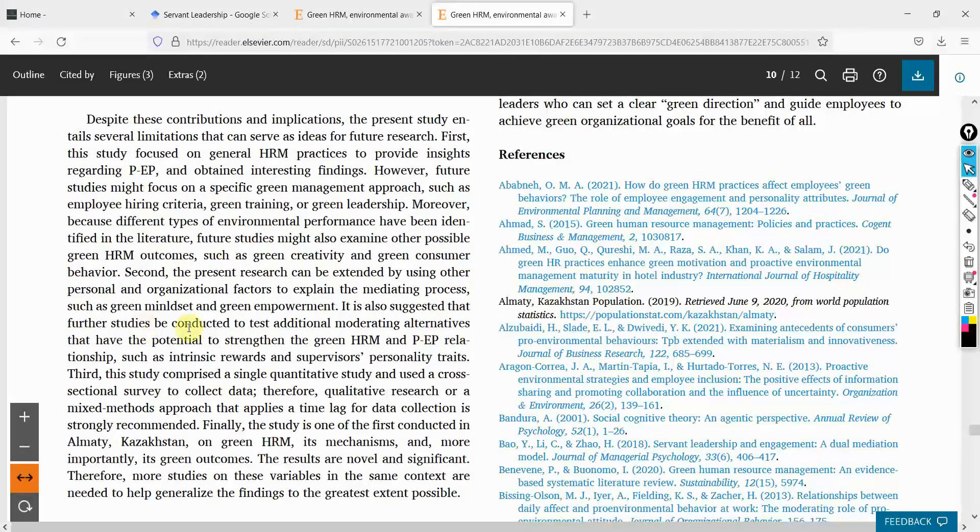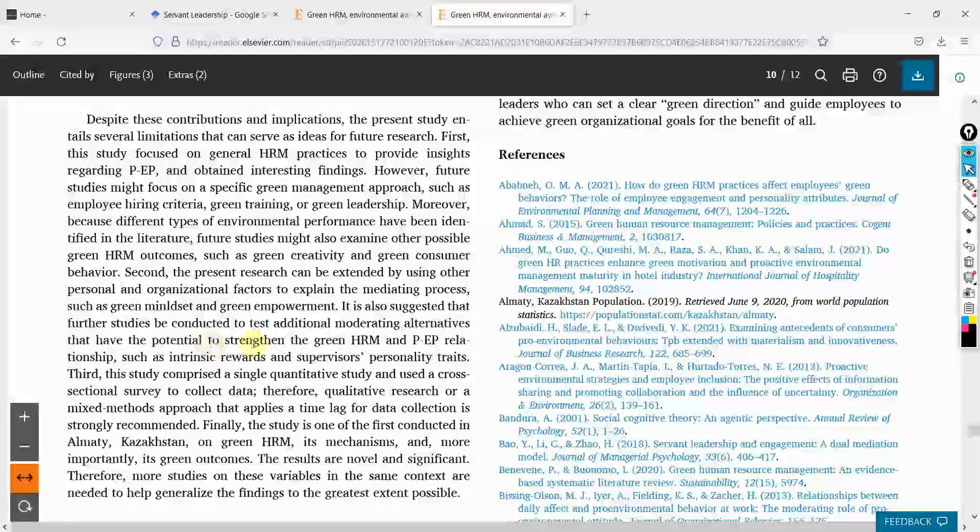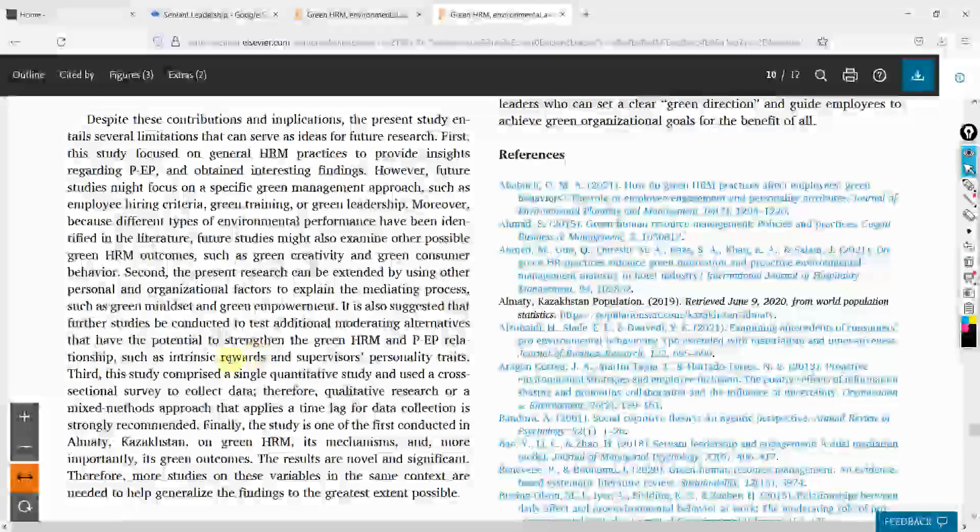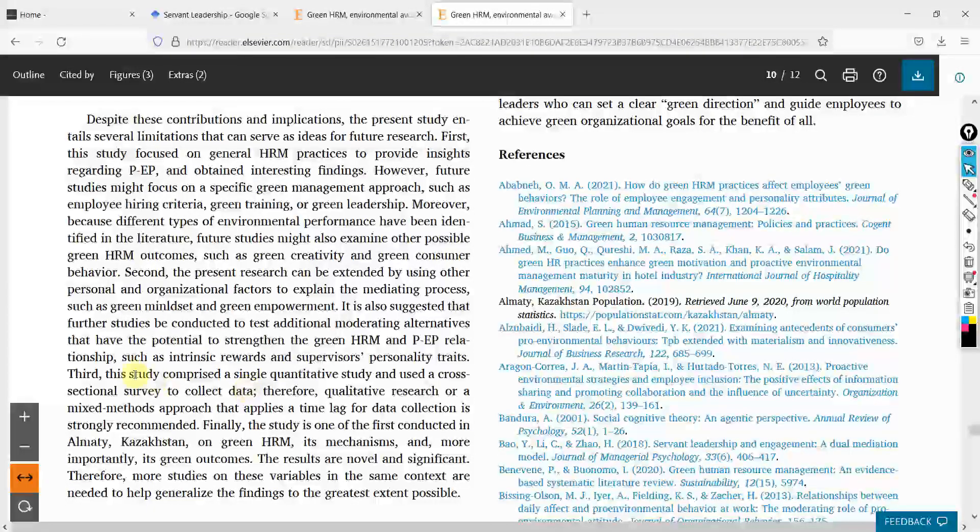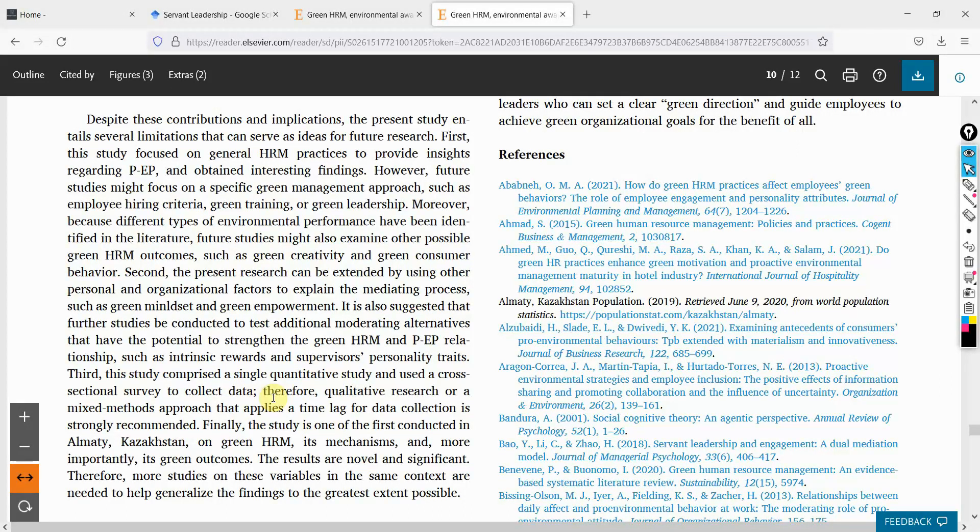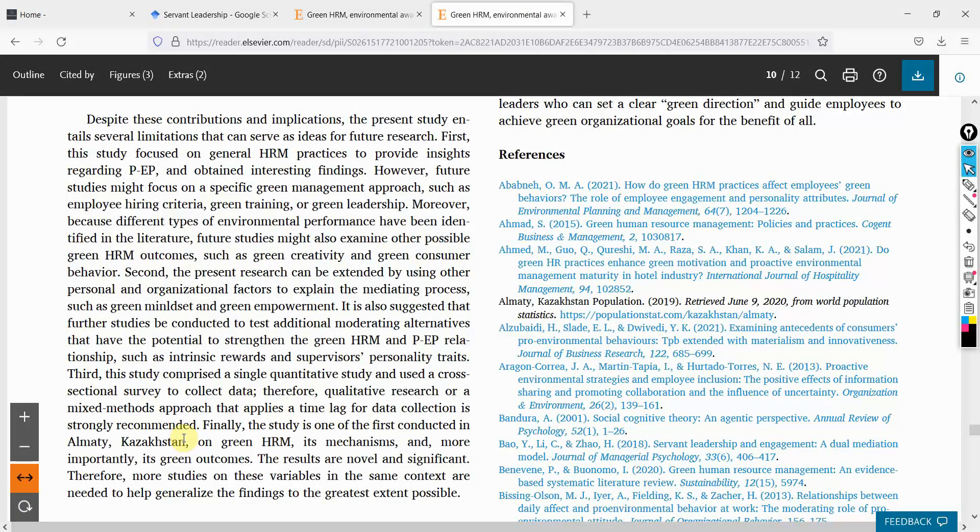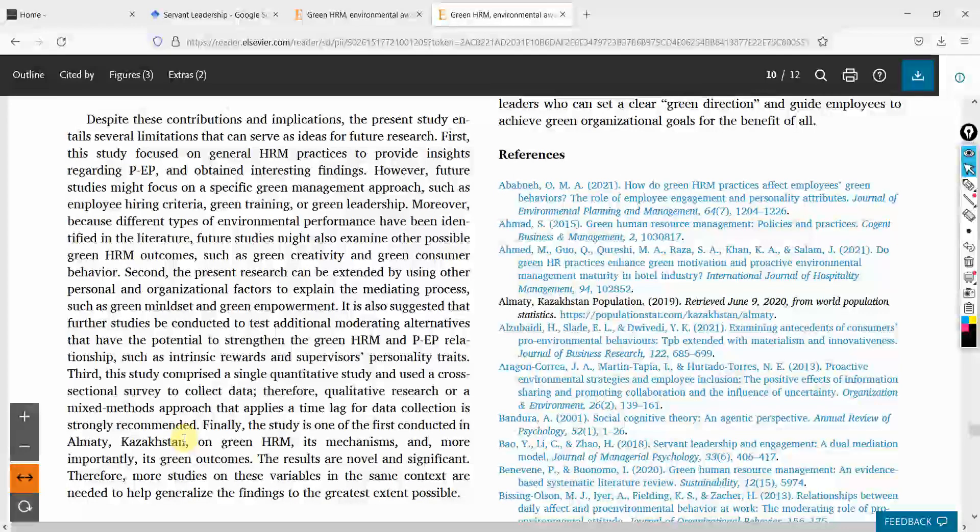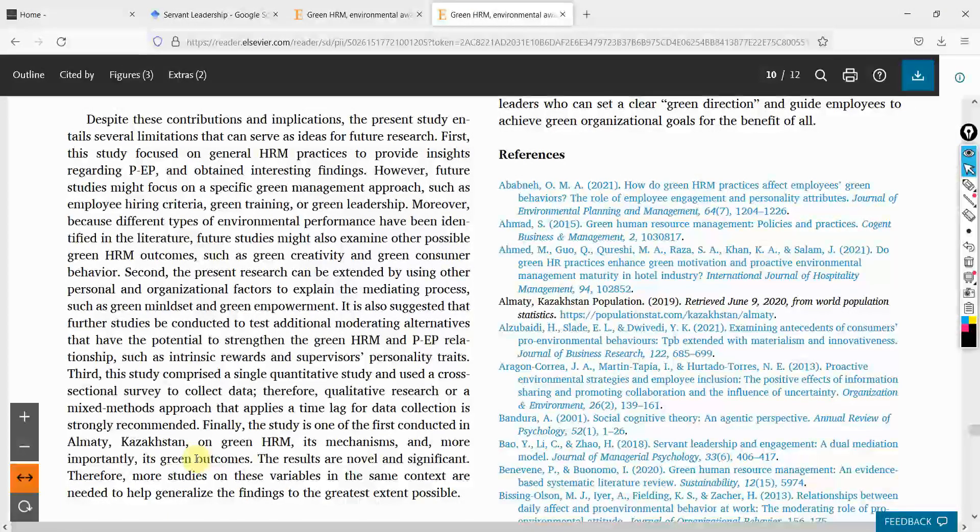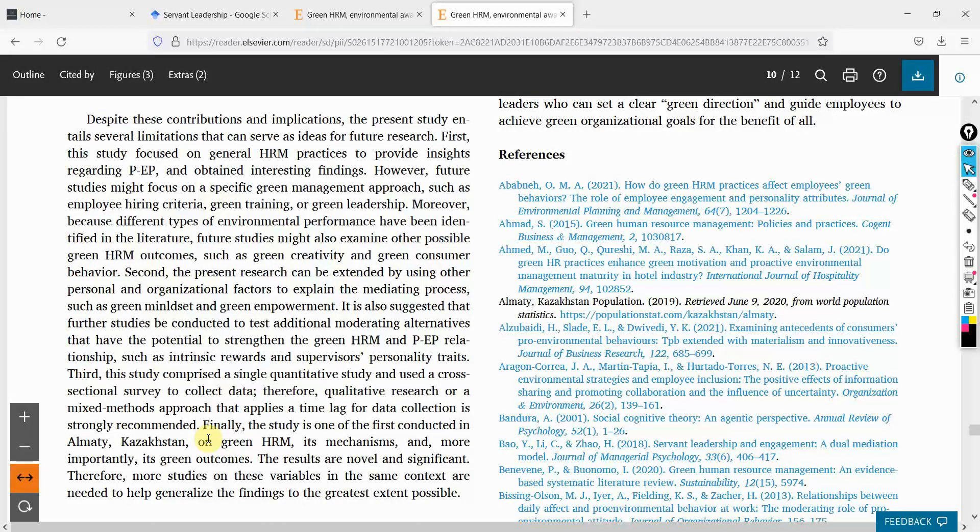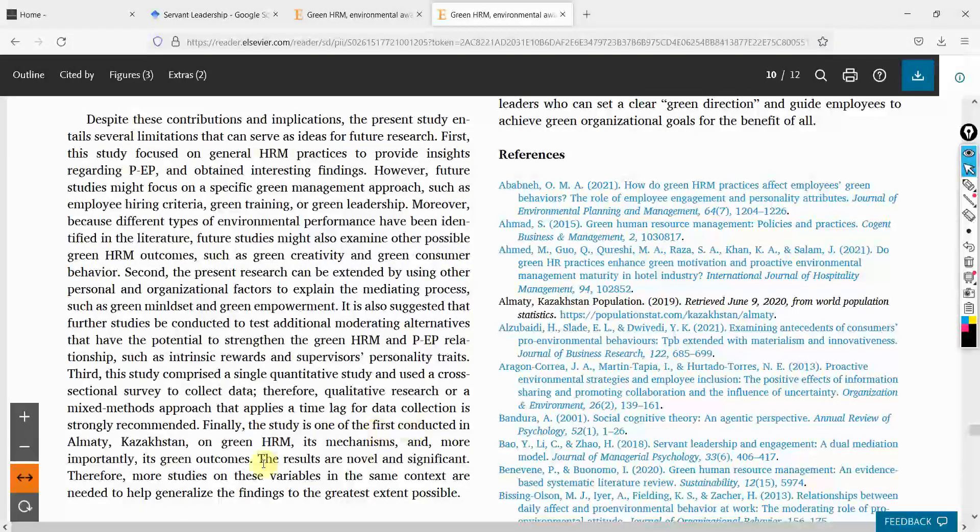It is also suggested that future studies be conducted to test additional moderating alternatives. Now what are the moderating alternatives? It could be intrinsic rewards, supervisors' personality traits. And it was a quantitative research, so you can have qualitative methods as well, maybe a mixed method research. For now I'm not interested in it. Contribution primarily relies or is focused on adding new relationships, new variables in your model, new methodologies in your model. Contribution is not focused on taking it from one culture to another culture.